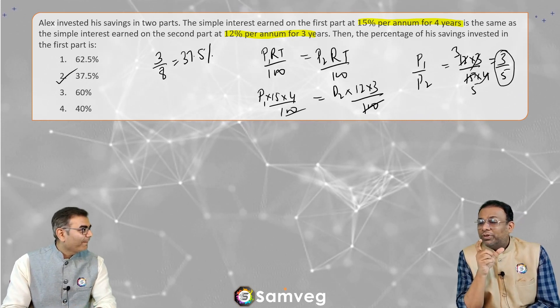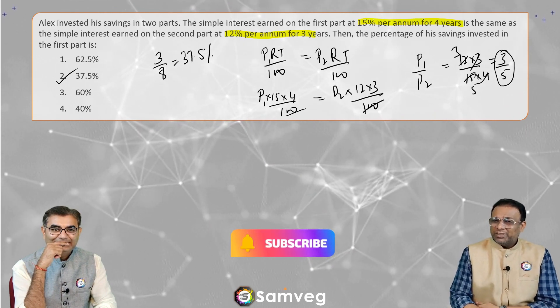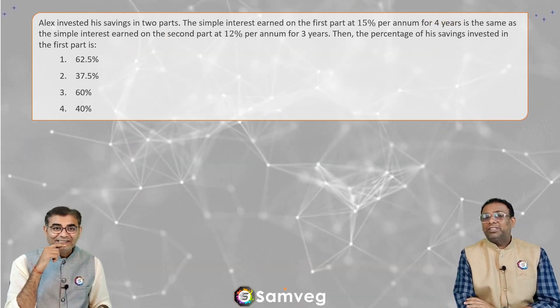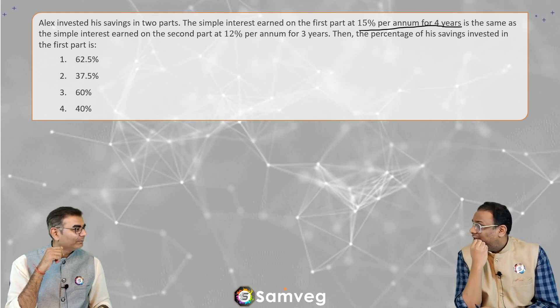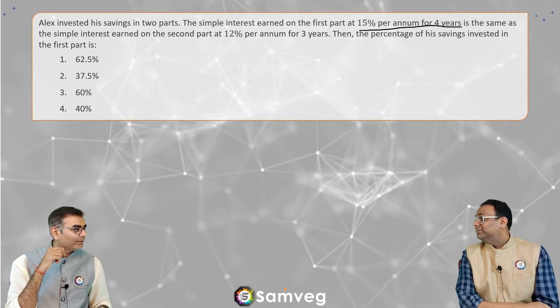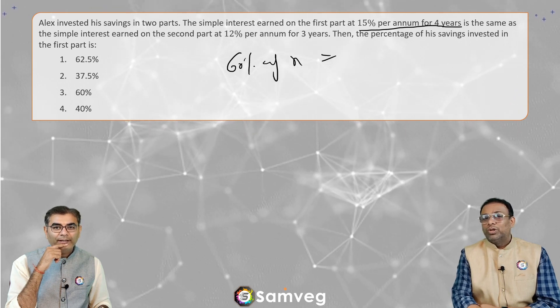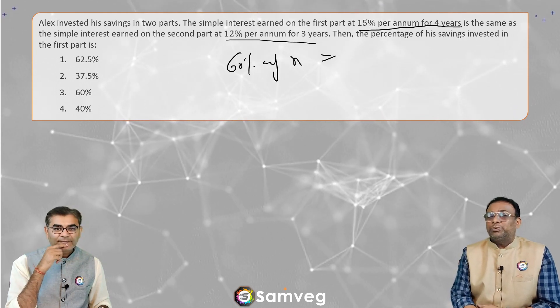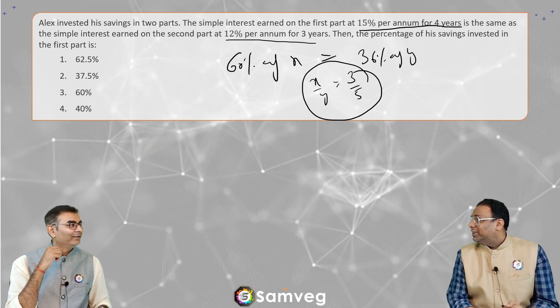You know what? Even in this question, I can solve it orally without using pen and paper. It's pure logic. Alex invested his savings in 2 parts. The simple interest earned on the first part at 15% per annum for 4 years — every year 15% interest, so 4 years gives 60% of some amount x. The second part at 12% per annum for 3 years — every year 12%, so 3 years gives 36% of y. So 60% of x equals 36% of y. Therefore x by y is simply 3 by 5.